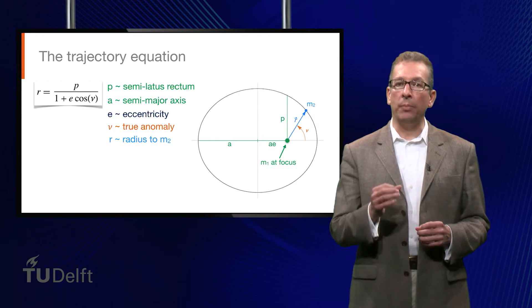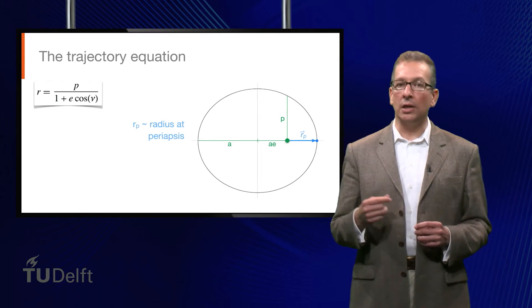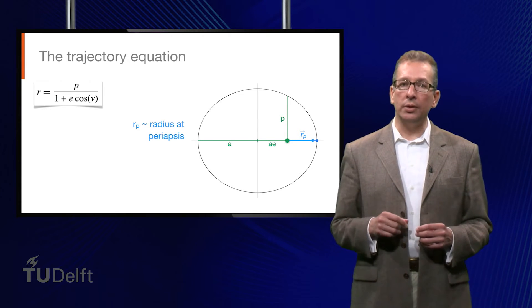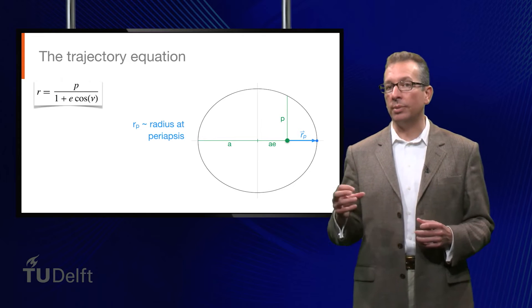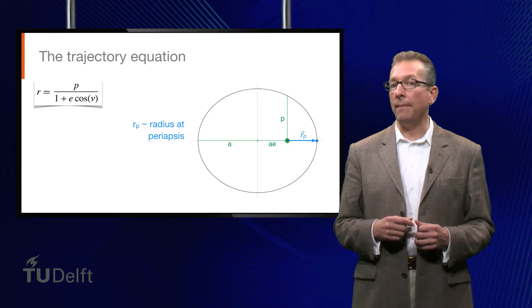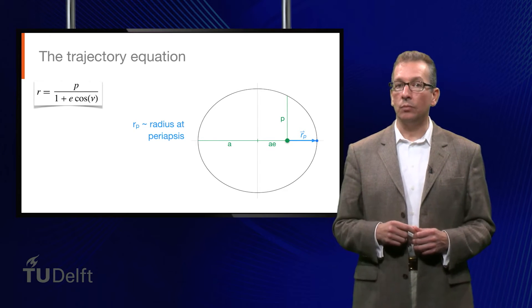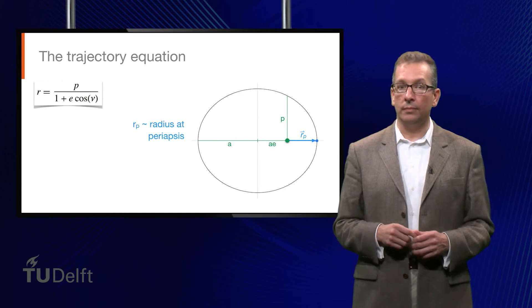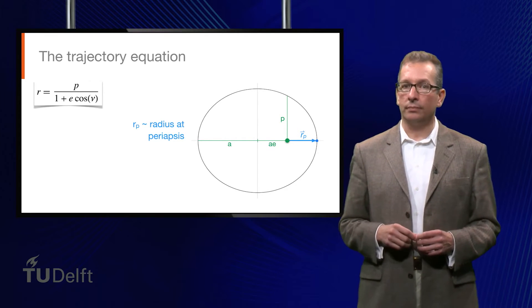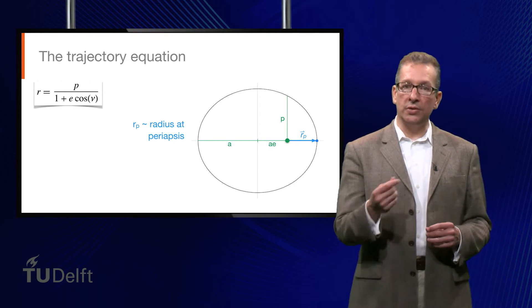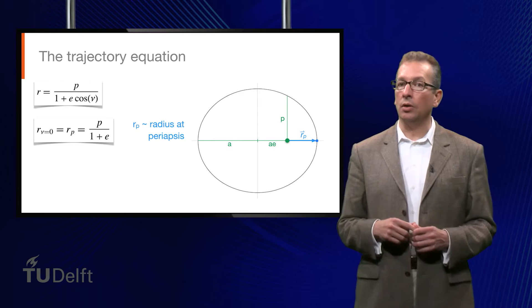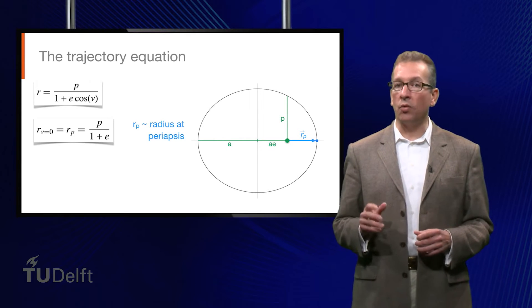First, we're going to look at the point on the trajectory where m2 is closest to m1, and this is called the periapsis. Note that this point can go by other names depending on which central body is m1. If m1 is Earth, we call the closest point perigee. If m1 is the Sun, we call it perihelion, and so forth. In any case, at periapsis, the true anomaly nu is zero. When we substitute nu is zero into the trajectory equation, we see that the length of the radius at periapsis, called rp, is equal to p over 1 plus e.